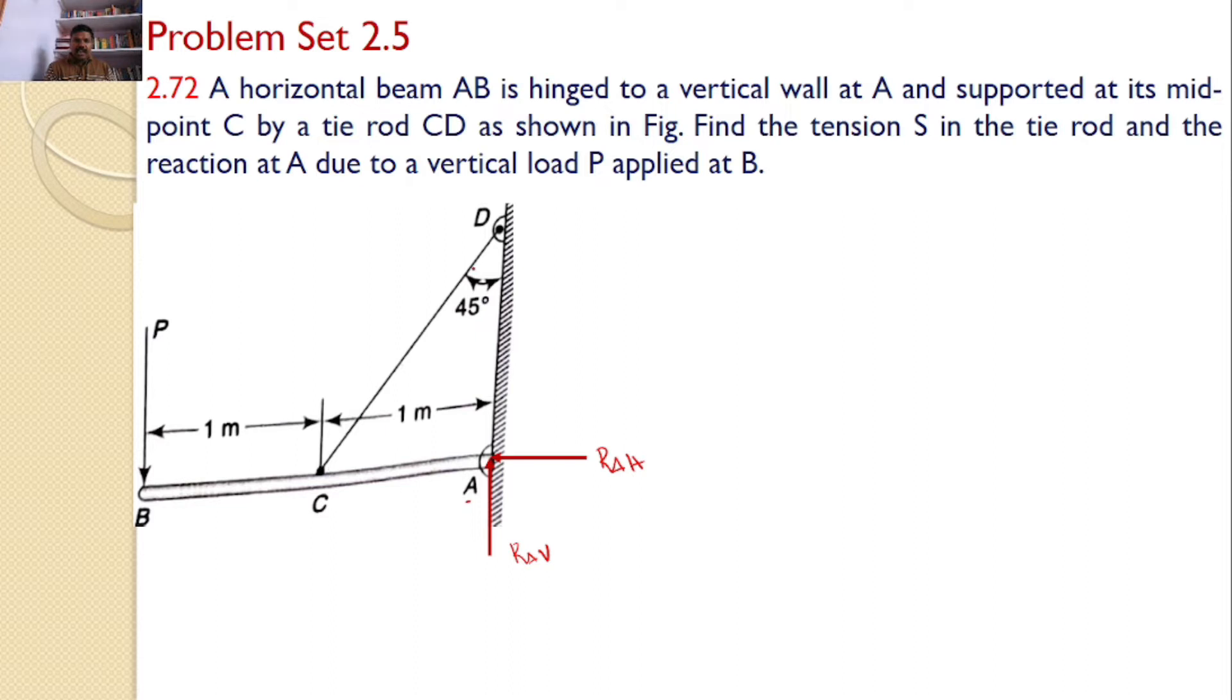It is tied with a rod CD. Hence, a force along the rod CD away from point C. Let this value be S. It is also subjected to an applied force of magnitude P. This rod makes an angle 45 degrees with the vertical. That means this angle equals 45.